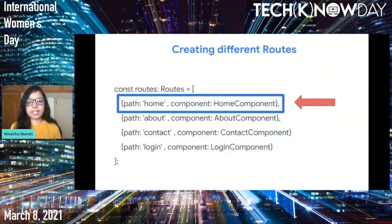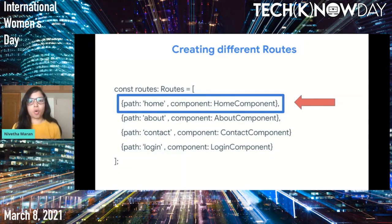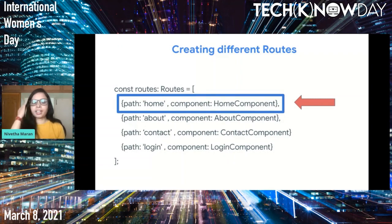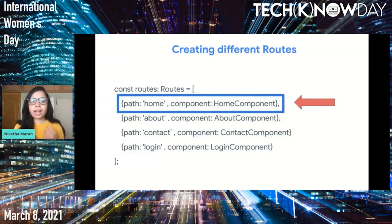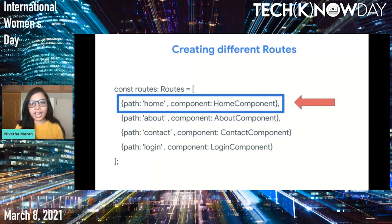The fourth step is creating the desired routes. In this example we have four different pages: home, about, login, and contact. As you can see in the code section, I have created an array of objects where each object contains a path and a component. The path is the name of the route and the component is what gets rendered when the user navigates to that particular path.